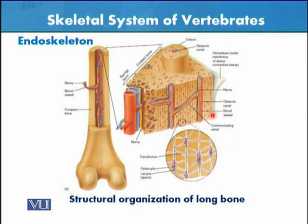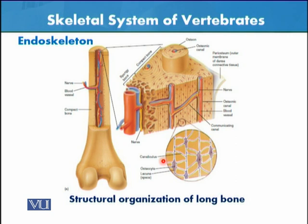Now let's look in more detail. At higher magnification, we can see the osteocytes located within the lacunae. These lacunae are interconnected with one another by the canaliculi. The bone structure is very hard because it has been impregnated with calcium and phosphate.